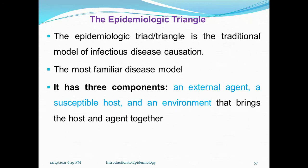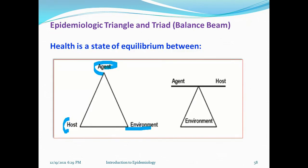The epidemiological triad is a traditional model of infectious disease. The most familiar model, it contains three components: agent, host, and environment. It is known as the balance beam model.